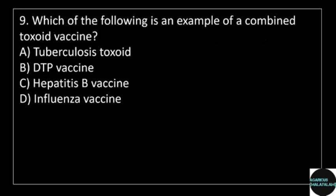9th question: which of the following is an example of a combined toxoid vaccine? Answer options: option A, tuberculosis toxoid; option B, DTP vaccine; option C, hepatitis B vaccine; option D, influenza vaccine.